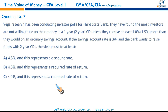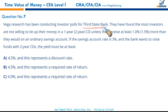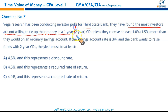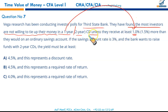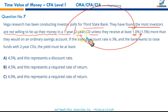Moving on. Vega Research has been conducting investor polls for Third State Bank. They found most investors are not willing to tie up their money in a one-year or two-year certificate of deposit unless they receive a premium of 1% for a one-year CD and 1.5% for a two-year CD.